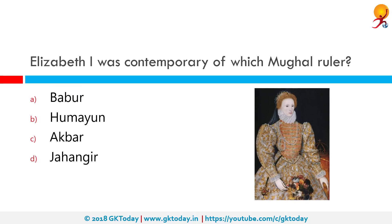Elizabeth I was contemporary of which Mughal ruler? The correct answer is Akbar. Elizabeth I reigned between 1533 and 1603, while Akbar ruled between 1556 and 1605.